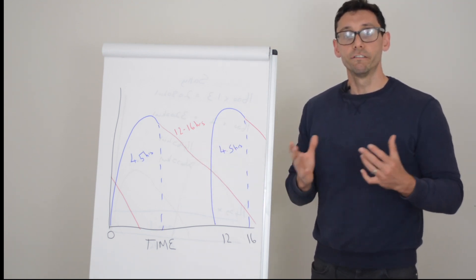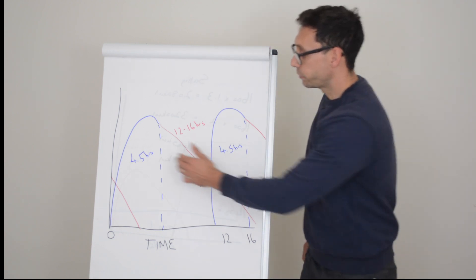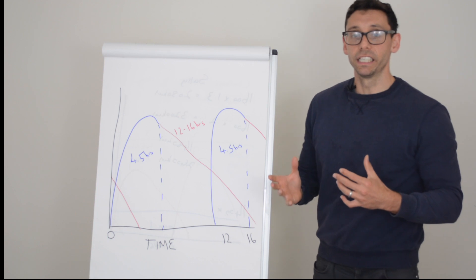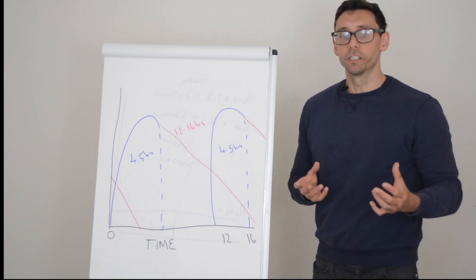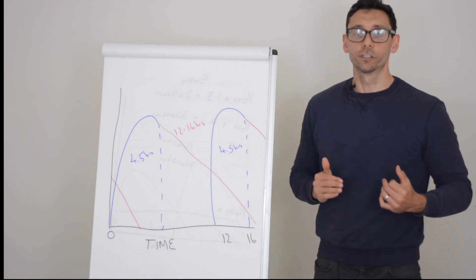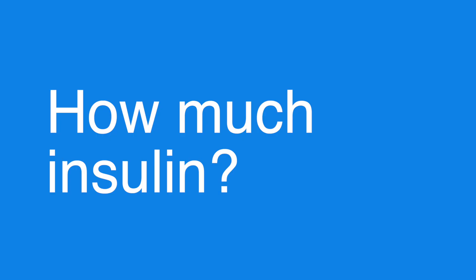Whereas something like an Insuman Comb 50 will be 50% rapid acting insulin and 50% intermediate acting insulin. So it depends on what you need and what your diabetes team thinks will do the job in regards to getting your blood glucose levels under control.